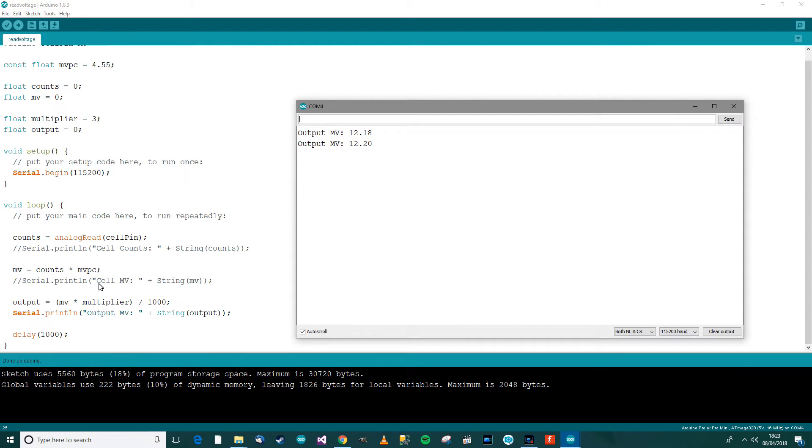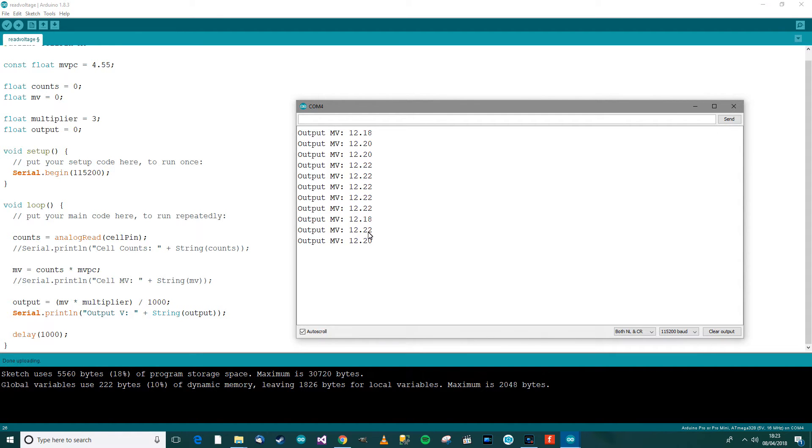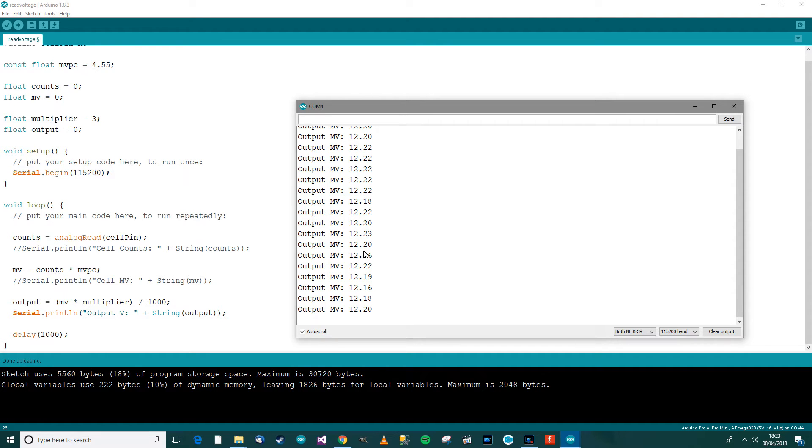All right, let's have a look now. Control shift M, and there we go. So output MV, which is now V, of course. It should be like that. Output volts, 12.2. And that is perfect. If I go over to my DC power supply on the screen there, it says exactly 12.2. So that's absolutely perfect.